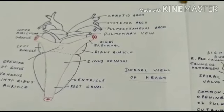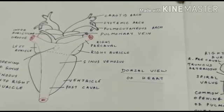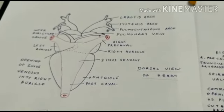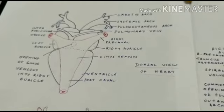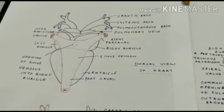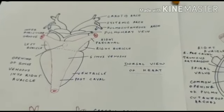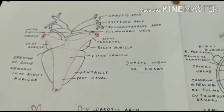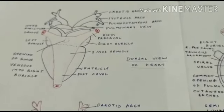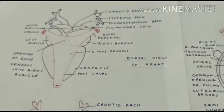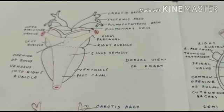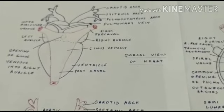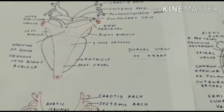The heart pumps the blood to the various parts of the body. The contraction of the heart is called systole and the relaxation is called diastole, and one systole and one diastole make up a single heartbeat.